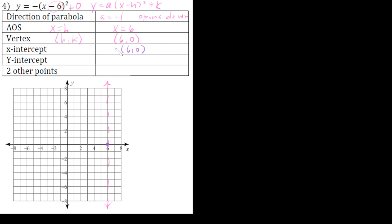Y-intercept: we're going to set x equal to zero. So that gives me y equals negative zero minus six squared. Y equals negative six squared, so y equals negative thirty-six.